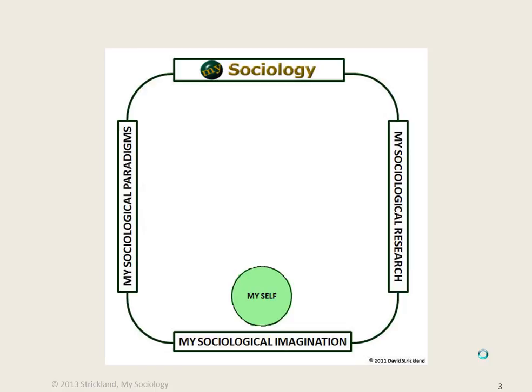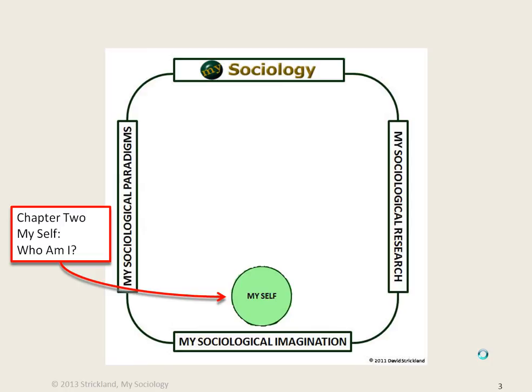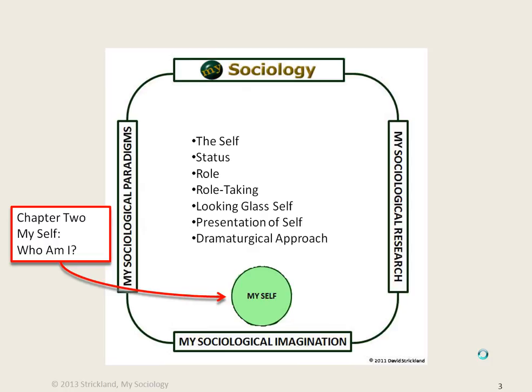Chapter 2 begins with a discussion of the self, including the self-concept and one's social identity. The topics include the self, status, role, role-taking, the looking-glass self, presentation of self, and Goffman's dramaturgical approach.